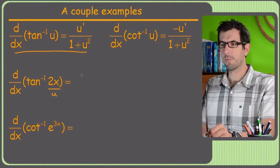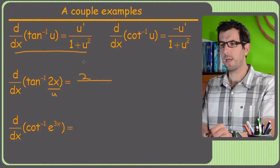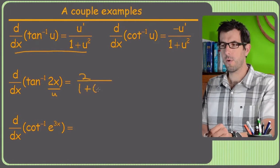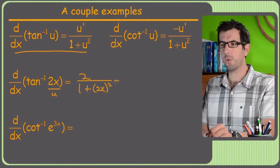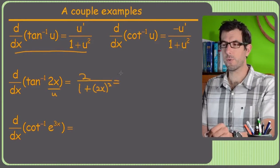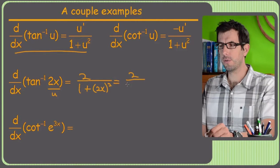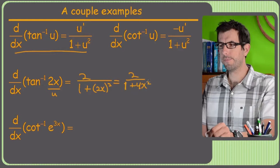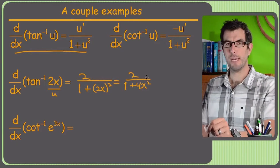So U prime is just going to be 2. The derivative of 2x is 2. And then downstairs we have 1 plus U squared. So that's the quantity 2x squared. The only way to mess this one up is if we don't realize that 2 is also squared. So that ends up being 2 over 1 plus 4x squared. Not too bad.